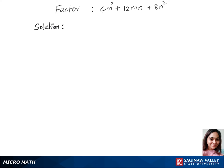Let's factorize this trinomial. We'll first bring out 4 from this since it's a common factor. So that's 4 times m square plus 3mn plus 2n square.